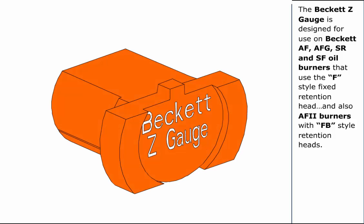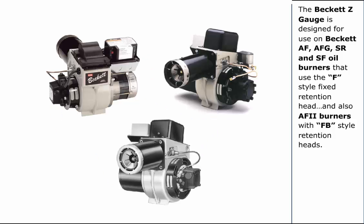The Beckett Z gauge is designed for use on Beckett AF, AFG, SR and SF oil burners that use the F style fixed retention head and also AF2 burners with FB style retention heads.